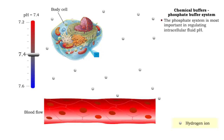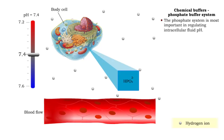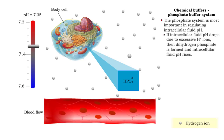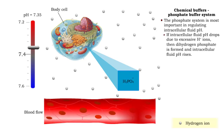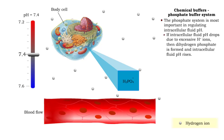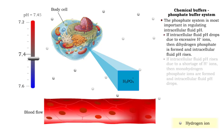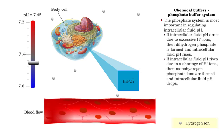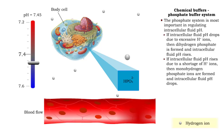The phosphate system is most important in regulating intracellular fluid pH. If intracellular fluid pH rises due to a shortage of hydrogen ions, then monohydrogen phosphate ions are formed and intracellular fluid pH drops.